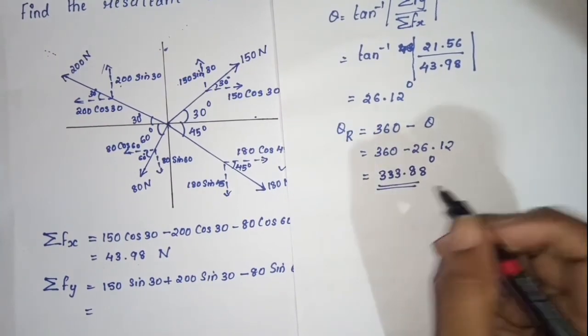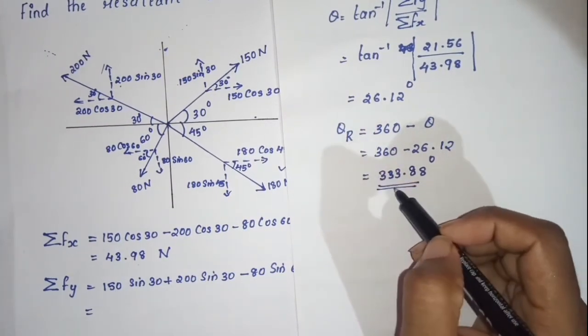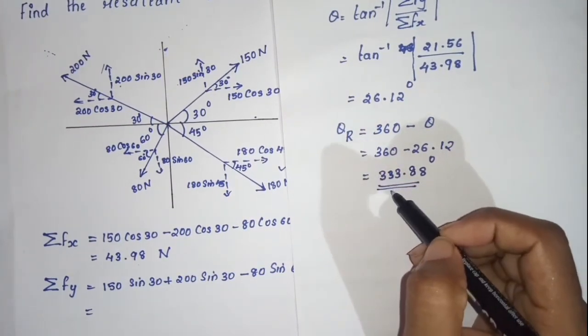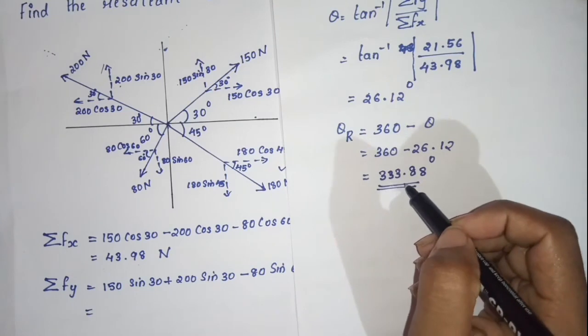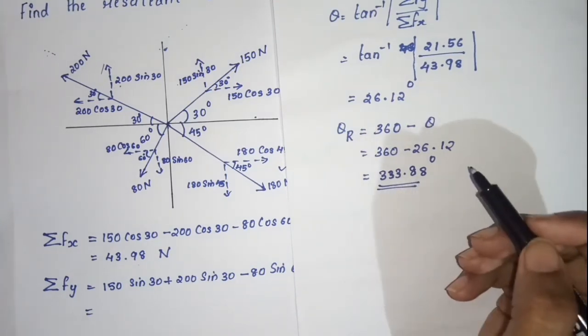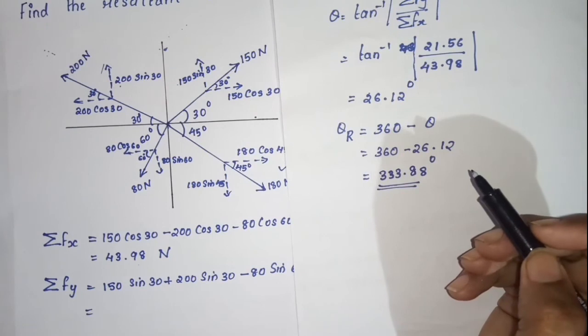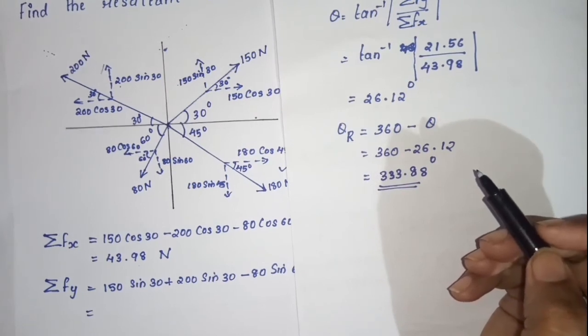The resultant theta R is 333.88 degrees. All the problems are clear. Thank you.